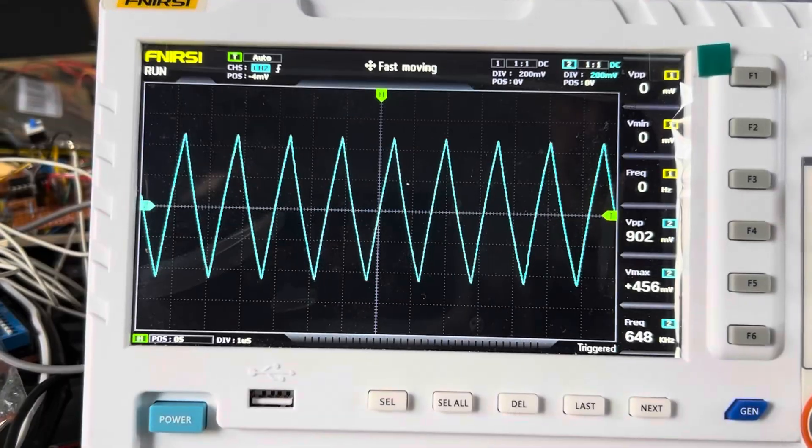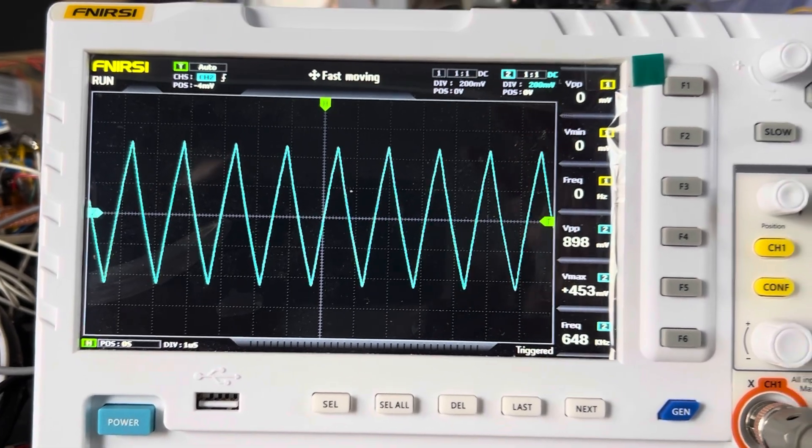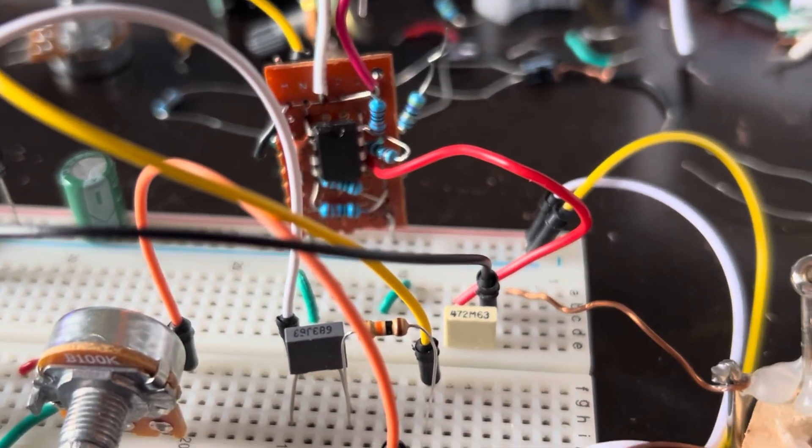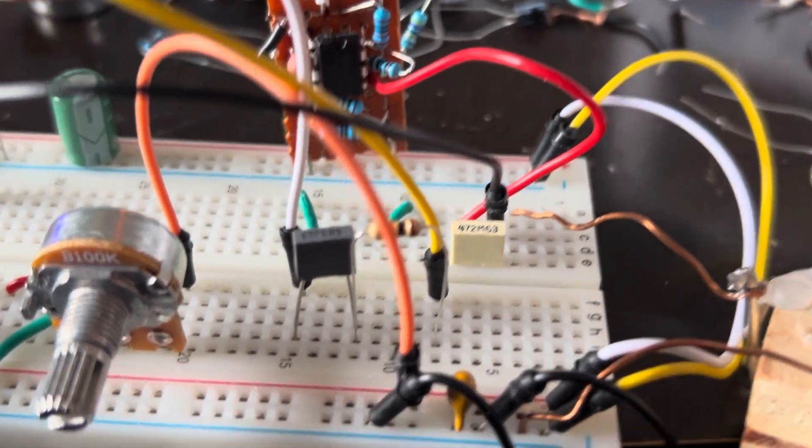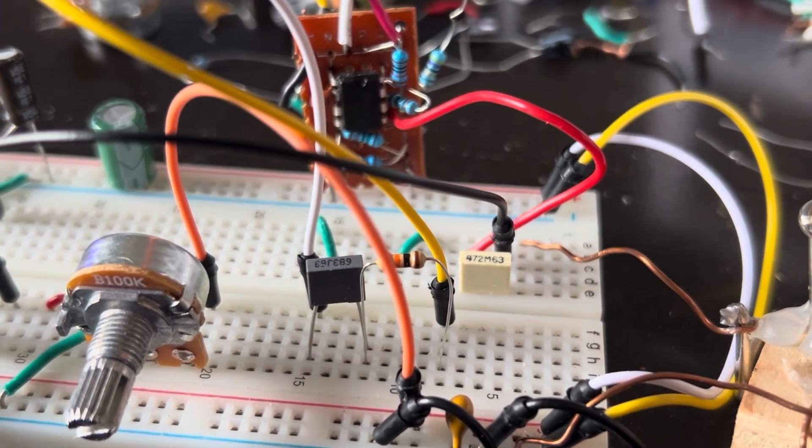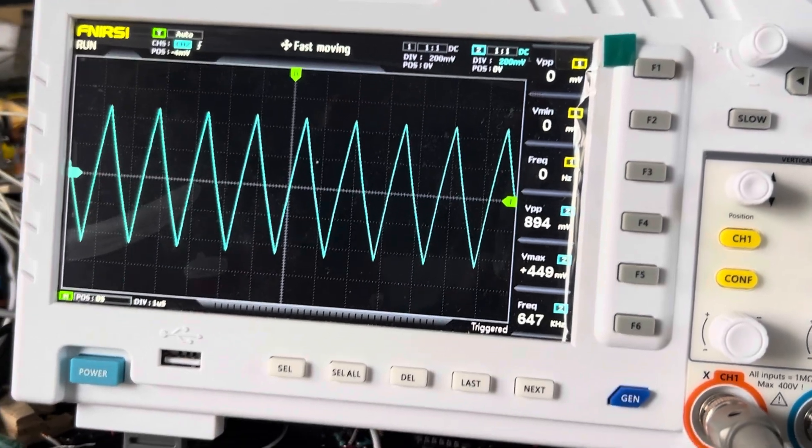So this is a basic triangle wave that I'm putting out after taking a wave from the 555 timer and putting it through this resistor capacitor. This would be going out to the antenna.